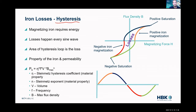Turning a motor into a magnet requires energy. If I have my AC sine wave down here, I have my flux density curve on the top, and I have a color-coded pattern.